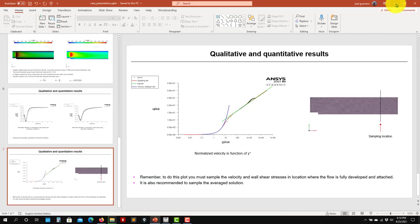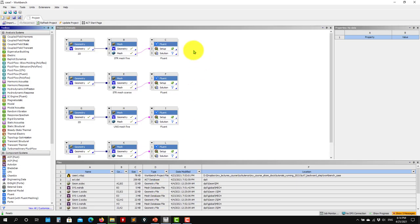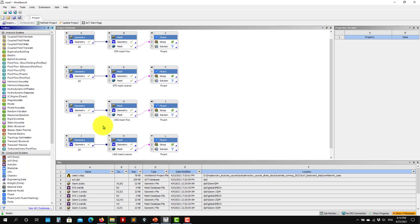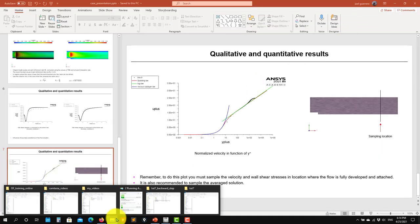This is the case we're going to work out. In the folders you can download, you'll find the Workbench case. Here you have the geometry and different meshes - the fluid meshes. See you have a structured fine mesh, a structured coarse mesh, and the structured fine and coarse meshes, so you have different meshes you can modify.